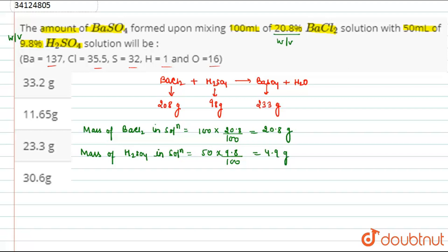So, we have to calculate this equation. That 98 grams of H2SO4 reacts with 208 grams of BaCl2. Like simple unitary method. 98 grams of H2SO4 reacts with 208 grams of BaCl2. This is standard value. So, 1 gram H2SO4 will react with 208 divided by 98 grams of BaCl2. So, 4.9 grams will react with 208 divided by 98 into 4.9 grams.